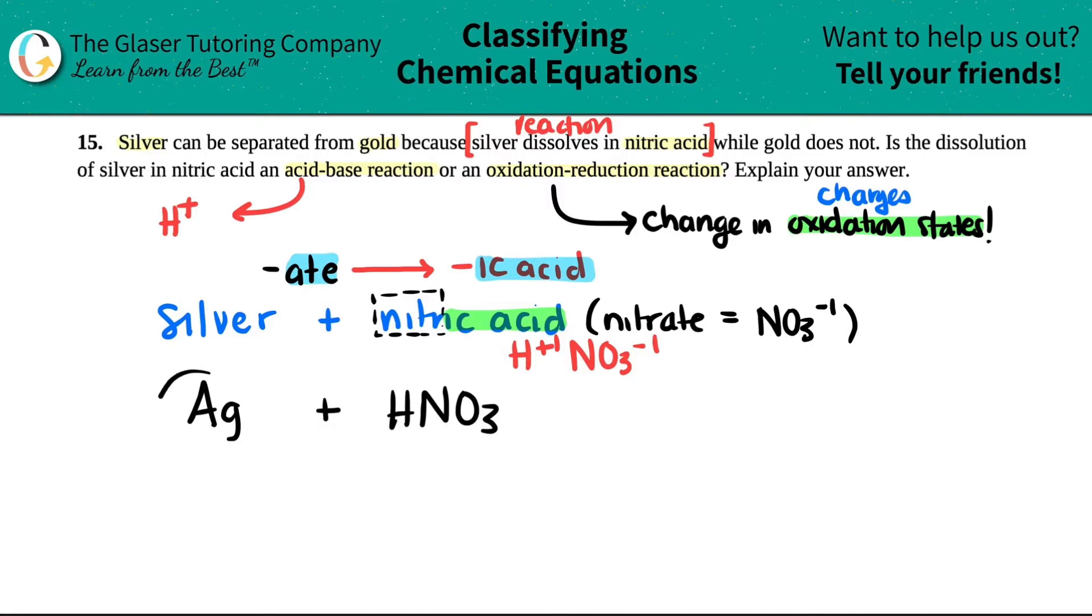And now this metal, because silver is a metal. This metal is dissolving, which means that it's changing. It's reacting with the HNO3. And what's going to happen?